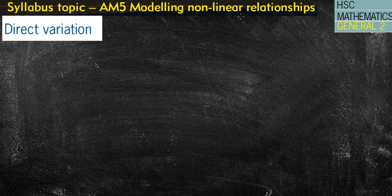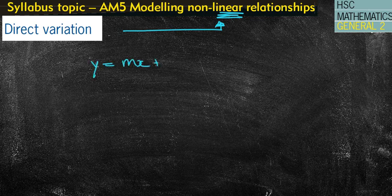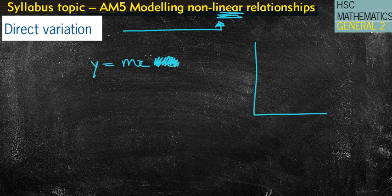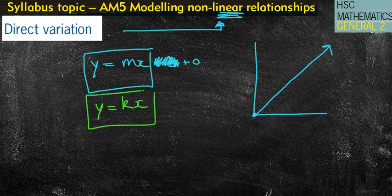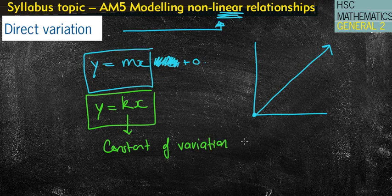So far we've been doing a lot of work on linear relationships, and direct variation is in fact more about linear. Then we get to have a look at inverse variation, which is more the non-linear style. Our linear graph is y equals mx plus b. Direct variation is the same sort of thing, except there will be no y-intercept, which means you'll just have y equals mx. It's a straight line that always starts at the origin. Direct variation uses a slightly modified formula — y equals kx, where k is the constant of variation, and it works the same way as the gradient.